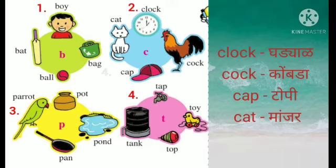Now let's see the second circle of the images. Clock — clock manje gadyaad. Cock — cock manje is kombda. Cap — cap manje kaya? Tar topi. Cat — cat manje is manzar.